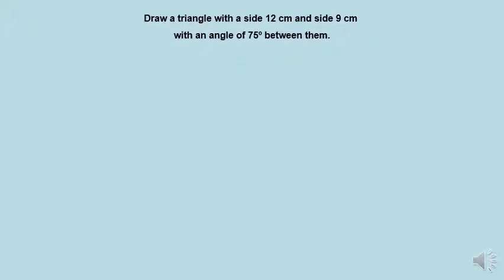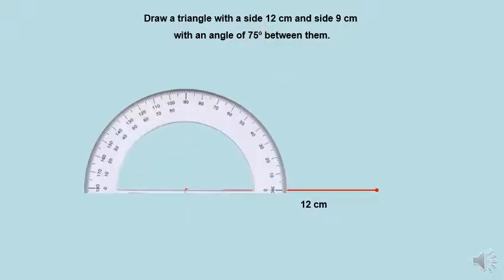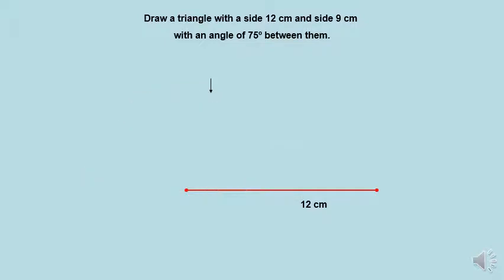Okay, draw a triangle with a side 12 cm and a side of 9 cm with an angle 75 degrees between them. First, we start drawing with the longest side, which is 12 cm. Then, we draw the angle, which is 75 degrees. Then, we draw the third side, which is 9 cm, and join the two endpoints to get the triangle.